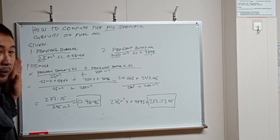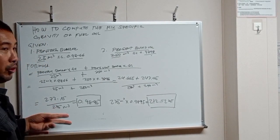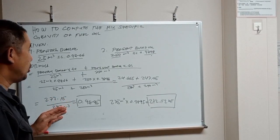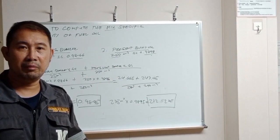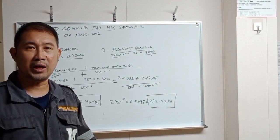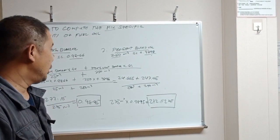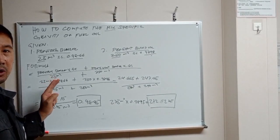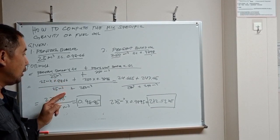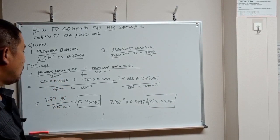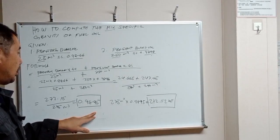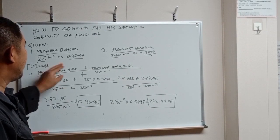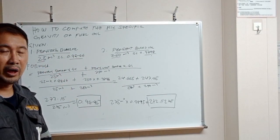I hope guys, with this simple formula that I shared, you can learn something useful. This is very important for us as chief engineers to know how to compute the mixed specific gravity so that we can get the correct new specific gravity from two grades of bunkers.